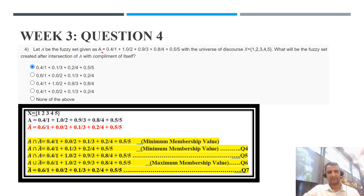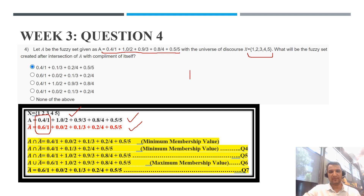For week 3, the fundamental concept involves a fuzzy set A with membership values and fuzzy elements over a universe of discourse. First, we calculate the complement of A. To find the complement, we subtract each membership value from 1. For example, 1 minus 0.4 equals 0.6. In the same fashion: complement of 0.9 is 0.1, complement of 0.8 is 0.2, and complement of 0.5 remains 0.5.